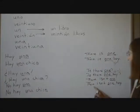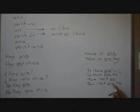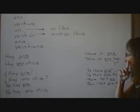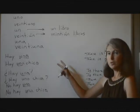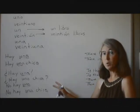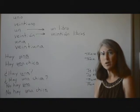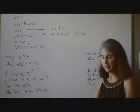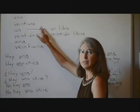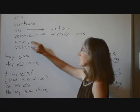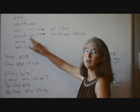If we want to say 'there's not one,' we can say no hay uno — if we're talking about something masculine or something unknown. If we're talking about girls, then we would have to say no hay una — we have to change the gender. No hay una. There isn't one. There isn't one boy. No hay un chico.